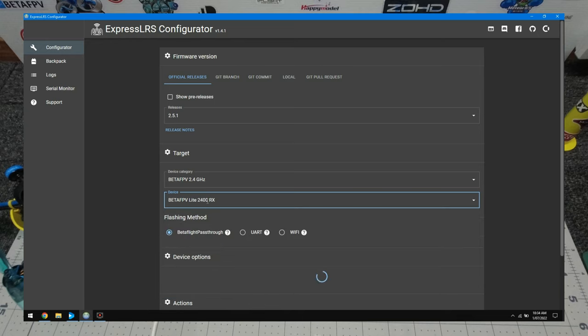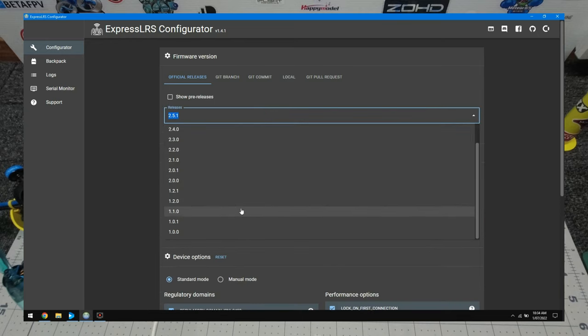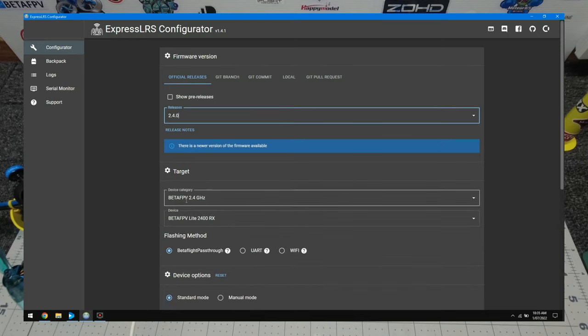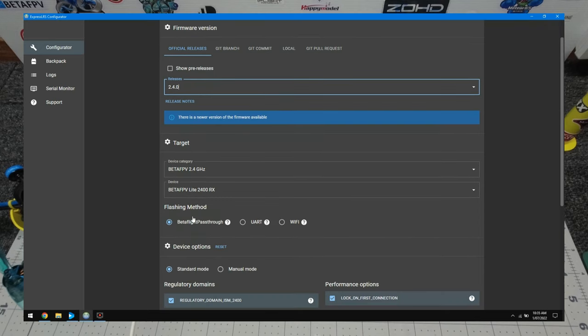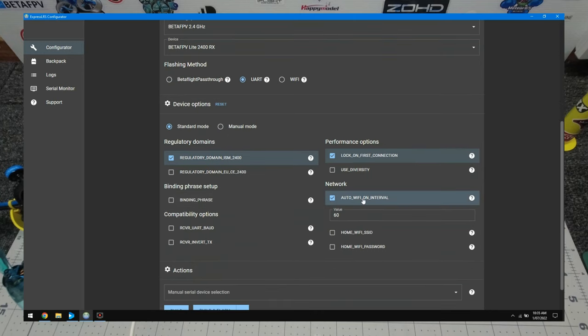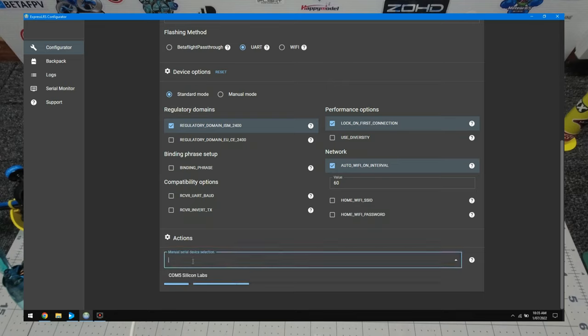This is the super easy part guys, you've already done the hard work. Scroll down to our BetaFPV 2.4 gig, which is our receiver, and we're looking at the light 2.4 RX. Check out the versions here, select the version you want. Bear in mind, make sure it's the same as the version on your radio otherwise you will not talk to each other. I'm going to jump straight onto 2.4.0 which is what my radio is.